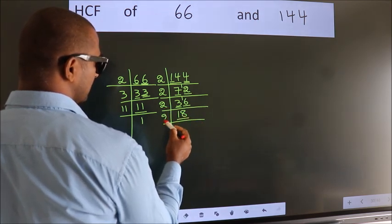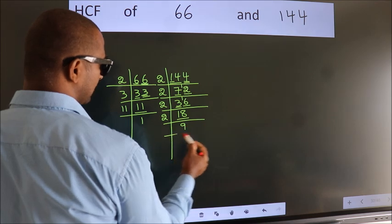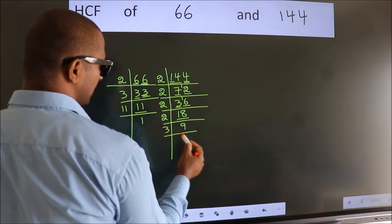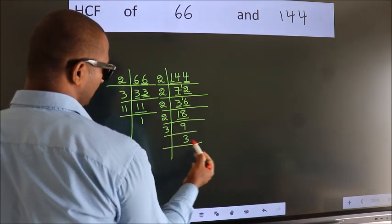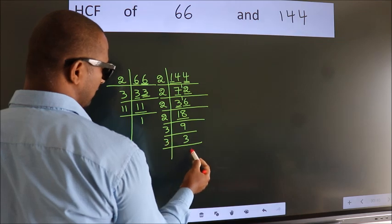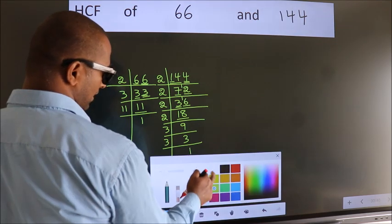Now 18 is 2 times 9 is 18. 9 is 3 times 3 is 9. 3 is a prime number, so 3 times 1 is 3. Therefore,